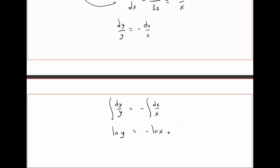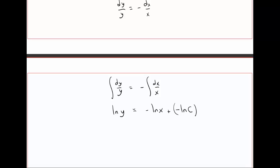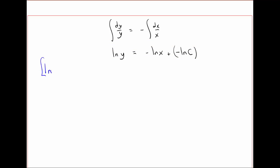Plus some constant. And in hindsight and having done these kind of problems before, let's make the constant minus natural log of c. And the reason I do that is because we have this rule that you should remember from your math class: natural log of a plus natural log of b equals natural log of a times b.